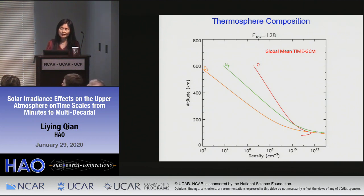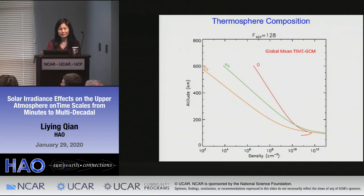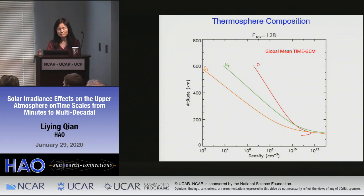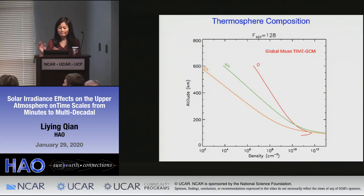The lighter species has a larger scale height and therefore decreases with altitude more slowly than the heavier species. Winds will change this distribution of species. When we talk about thermosphere composition, we often use a ratio between atomic oxygen and molecular nitrogen — the O/N2 ratio — which is a measure of the relative concentration between atomic oxygen and molecular nitrogen. I will use this O/N2 ratio a lot later in this presentation.